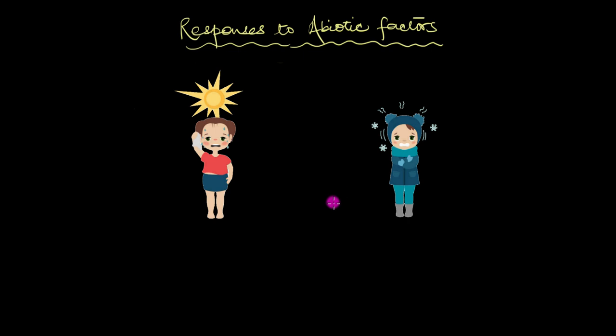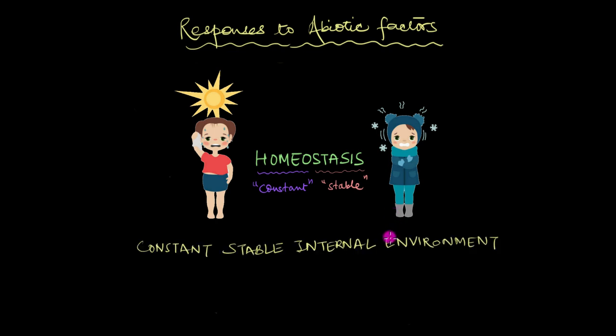Well, your body needs to maintain your optimal internal environment or it needs to maintain homeostasis. Homeo means constant and stasis means stable. So homeostasis is the tendency to maintain a stable, constant internal environment, kind of like a constant state of balance.